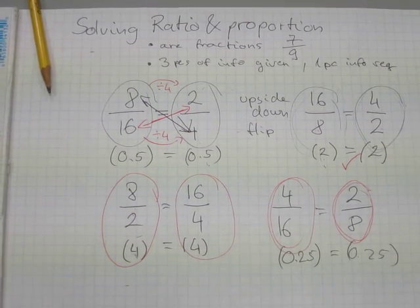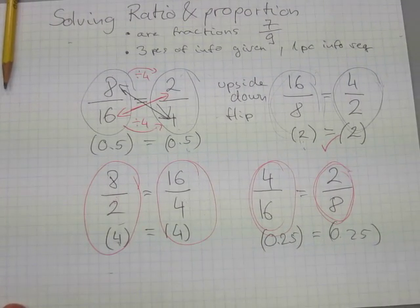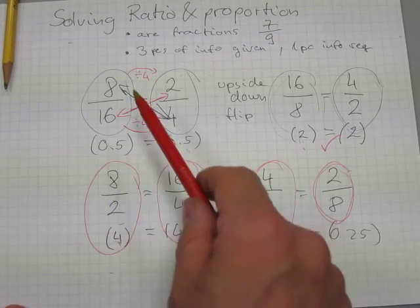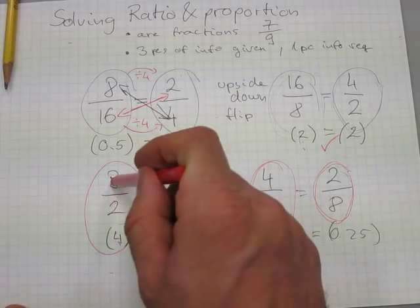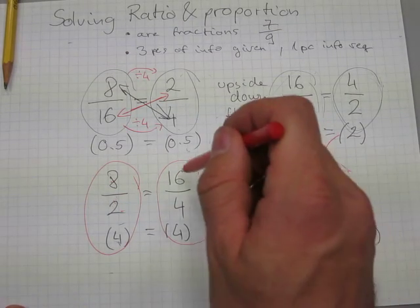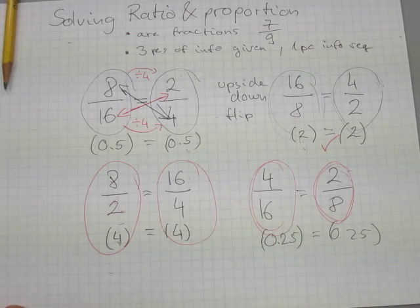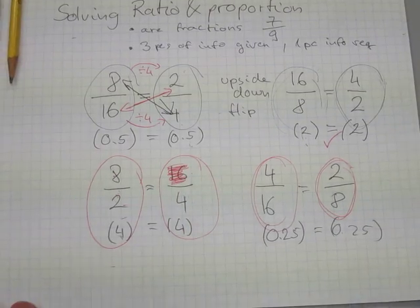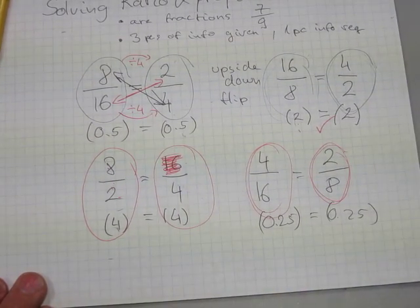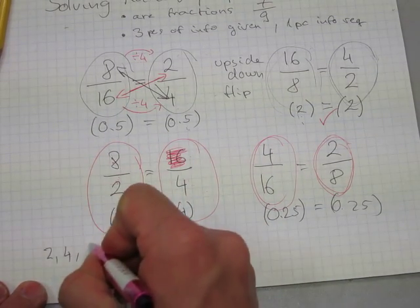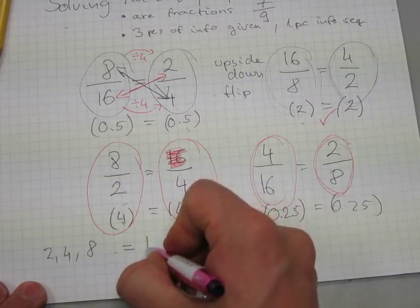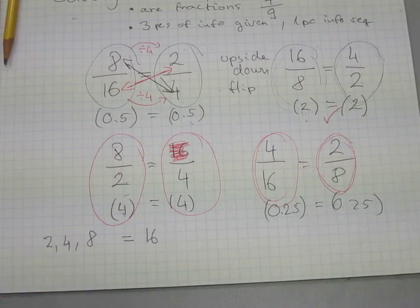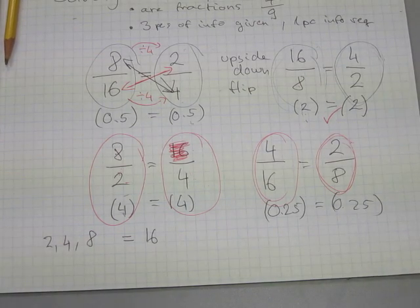Now, how do these facts help us with solving ratio and proportion? Ratio and proportion problems will be written in a format where one amount goes in a numerator, another in the denominator, a third in a numerator, and a fourth in a denominator. For example, if 16 is missing — just pretend it's not there — how can we use the digits 2, 4, and 8 to find the value 16?